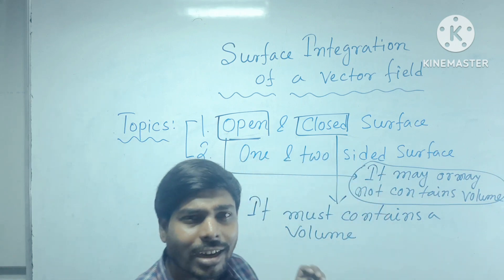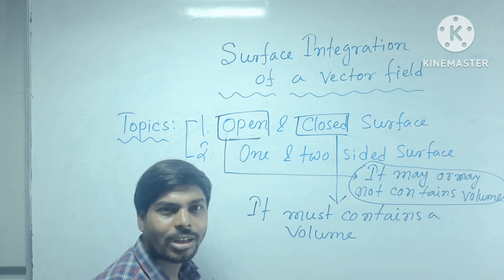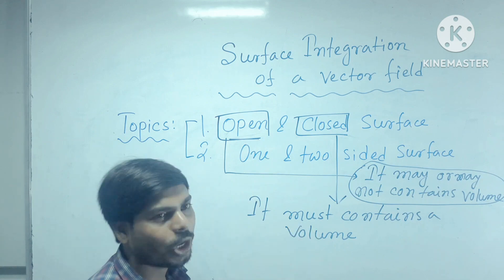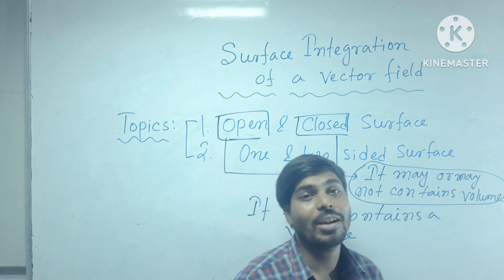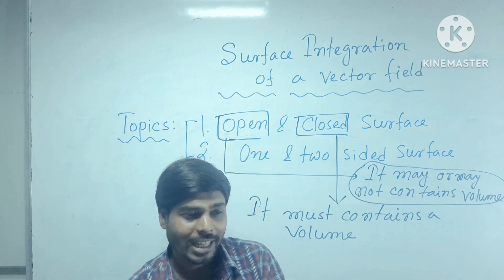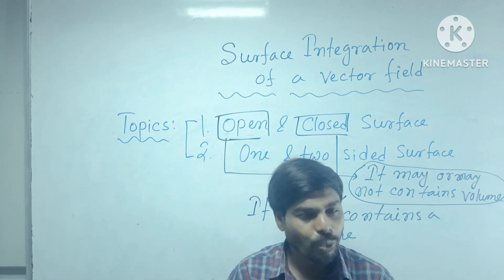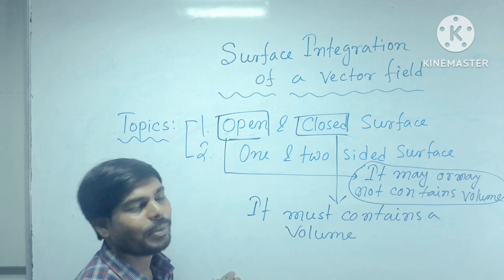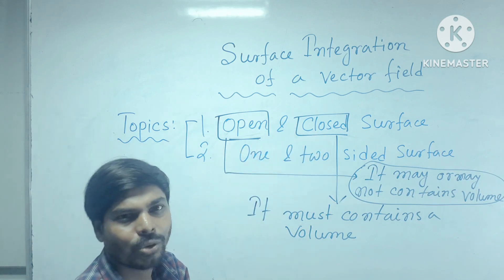Based on the volume — that a closed surface must contain volume and an open surface may or may not contain volume — can we make a concrete difference between the closed and open surface? No, obviously not. So based on volume alone, we cannot be sure whether a surface is open or closed. There is another experimental trick through which we can concretely make a distinction between closed and open surface.